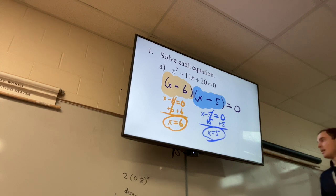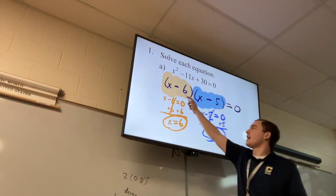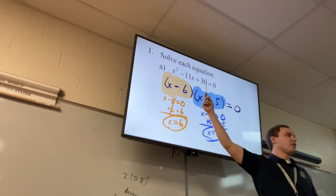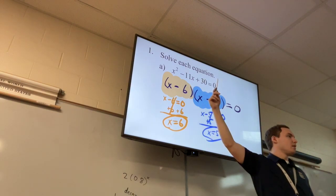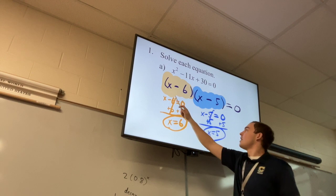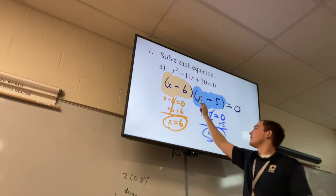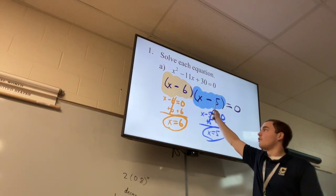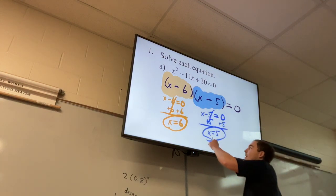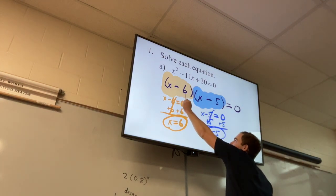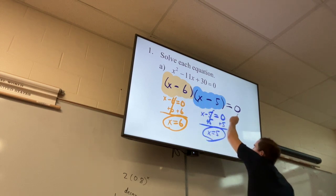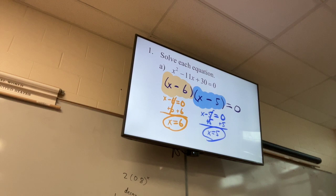The reason this works: we want everything on the left to be zero. A number times zero equals zero. If I plug in six for x, I get six minus six times six minus five, which becomes zero times one, which is zero. Or if I plug in five for x, I get five minus six times five minus five, which is negative one times zero, which equals zero. That's why that works — a little conceptual insight.